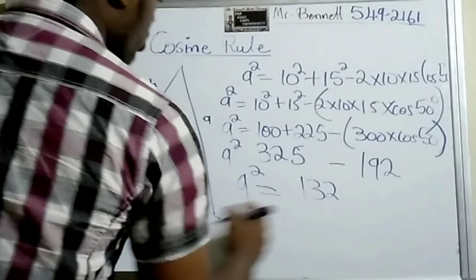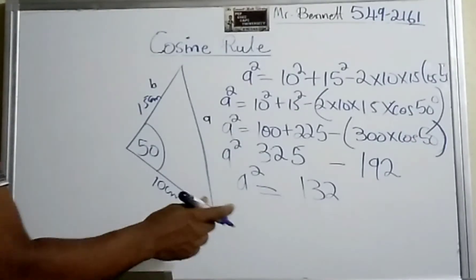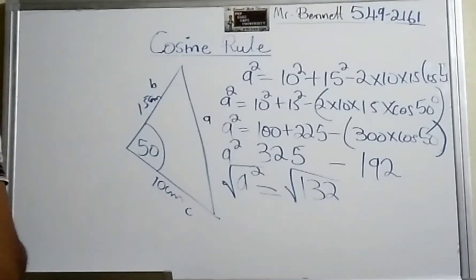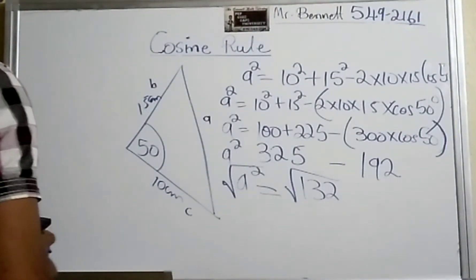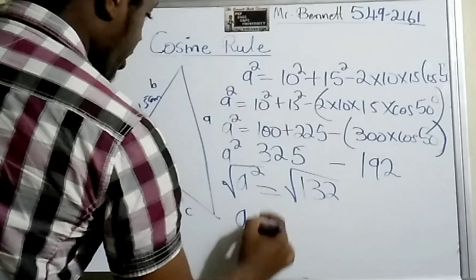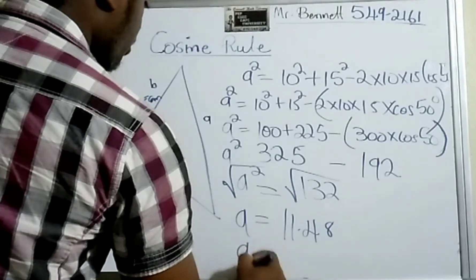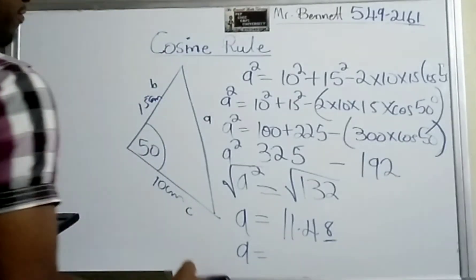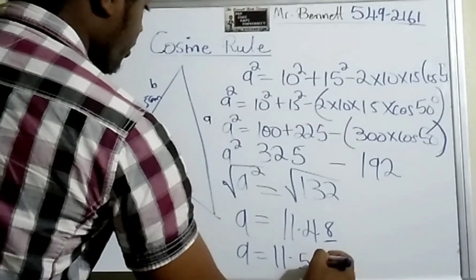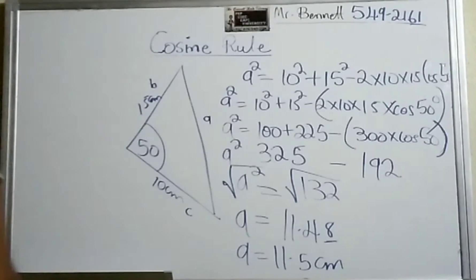So a² is equal to 132. In order to get rid of the square, we have to do the opposite, which is to find the square root. Therefore, a = √132 = 11.48, and to one decimal place, because 8 is higher than 5, we add 1 to the 4, so we get 11.5 in whatever unit. As you can see, the cosine rule is very simple.